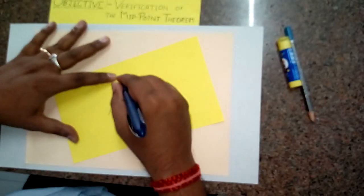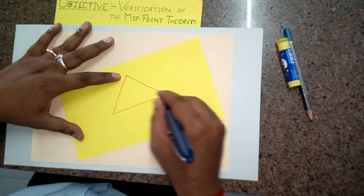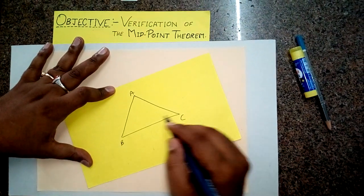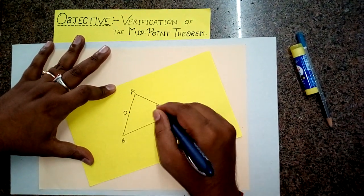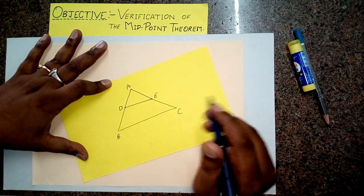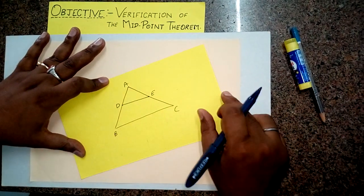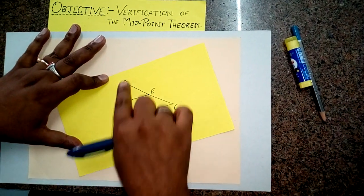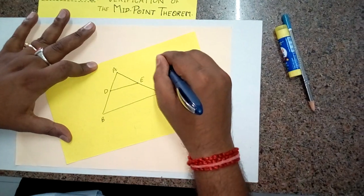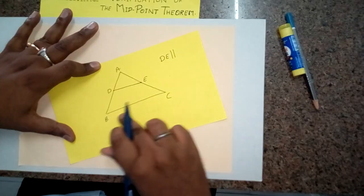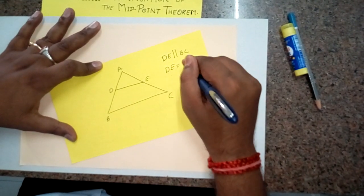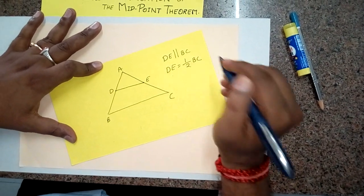If you take any type of triangle — I have taken a triangle and named it as ABC — and take the midpoints of any two sides. Let the midpoint of AB be D and the midpoint of AC be E, and join them. The statement of the theorem is that the line segment joining the midpoints of any two sides of a triangle is parallel to the third side and half of the third side. That is, DE will be parallel to BC and DE will be half of BC.